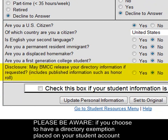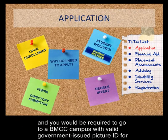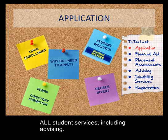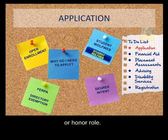Please be aware: if you choose to have a directory exemption placed on your student account, BMCC staff and faculty will not be able to assist you in any way over the phone. You would be required to go to a BMCC campus with valid government-issued picture ID for all student services, including advising. In addition, you will not be able to be listed in the president's list, dean's list, or honor roll.